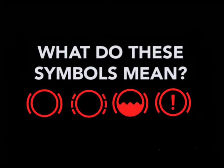Brake system. 1. Brake problem. Pay attention to the exact shape of the warning light. The word 'brake,' or a circle with two solid lines around it, represents a general brake system problem.